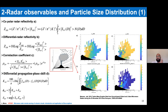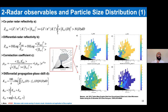The typical observables we can use to retrieve information about the volcanic plume are: the radar reflectivity factor, which is mainly correlated to particle size and distribution; the differential reflectivity, which is sensitive to particle shape; the correlation coefficient, which is sensitive to the heterogeneity of particle dispersion; and the differential phase shift, which provides information about particle shape and size.